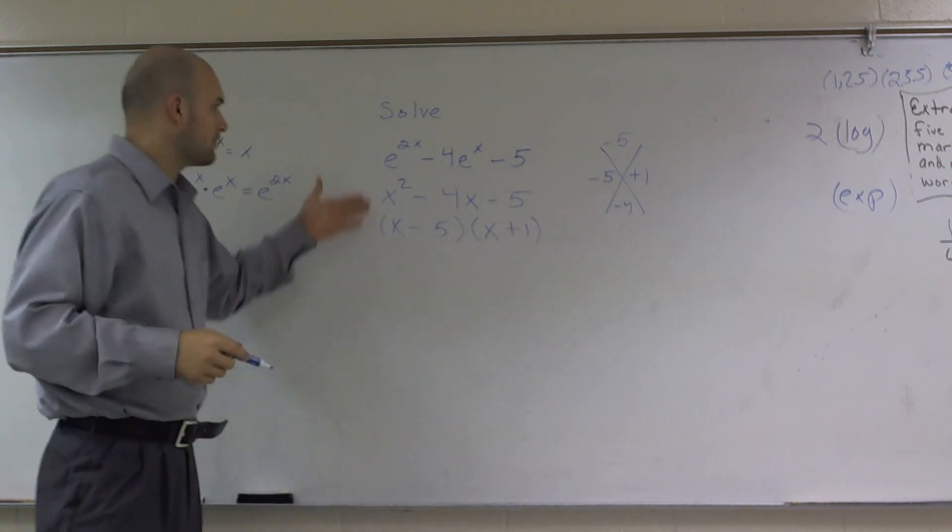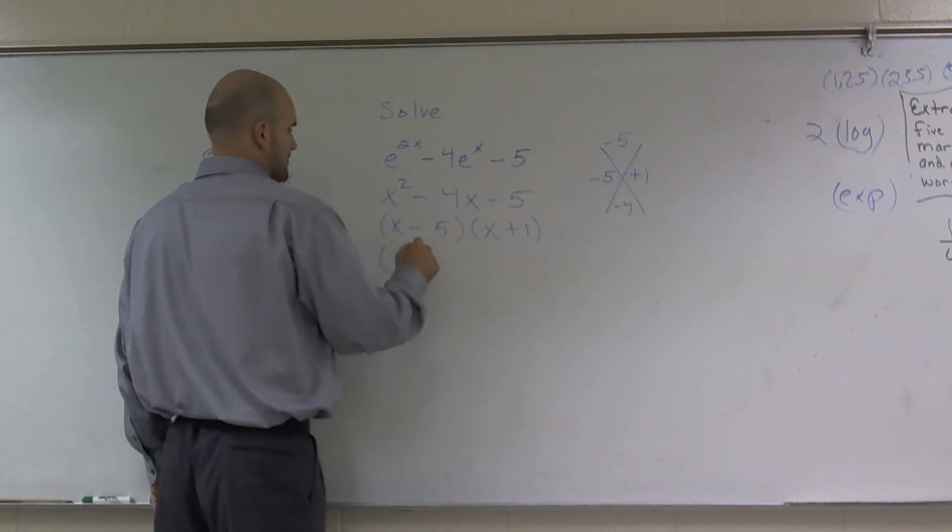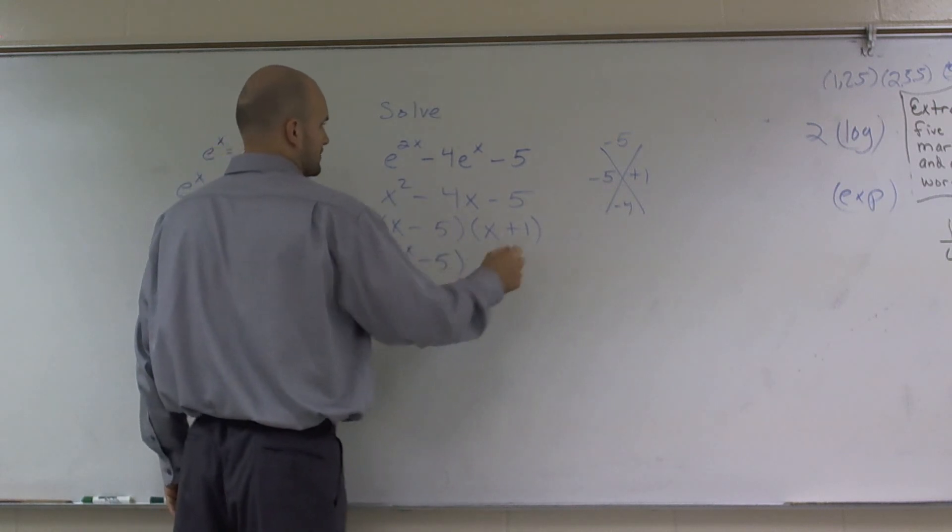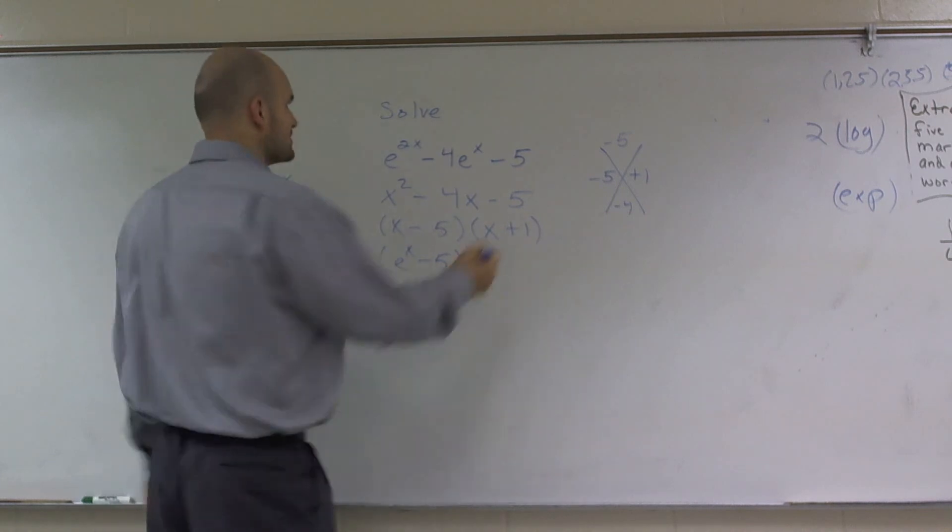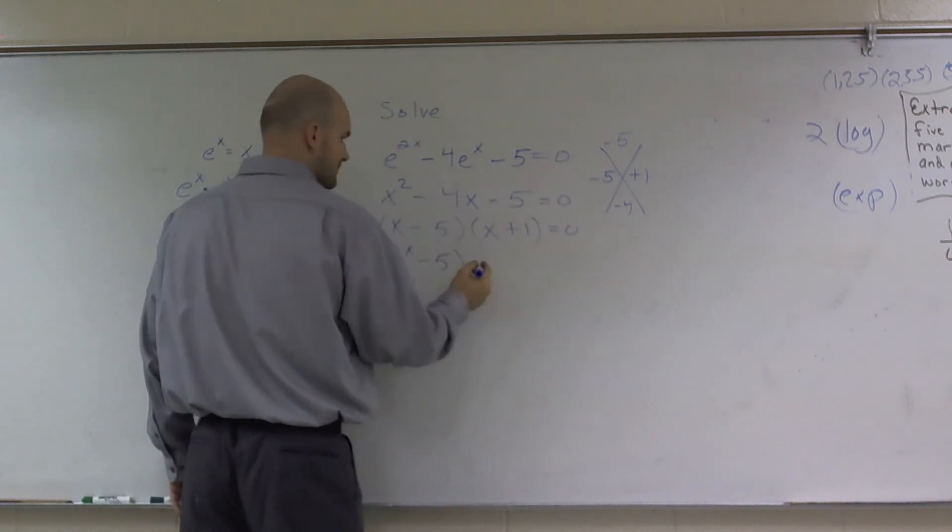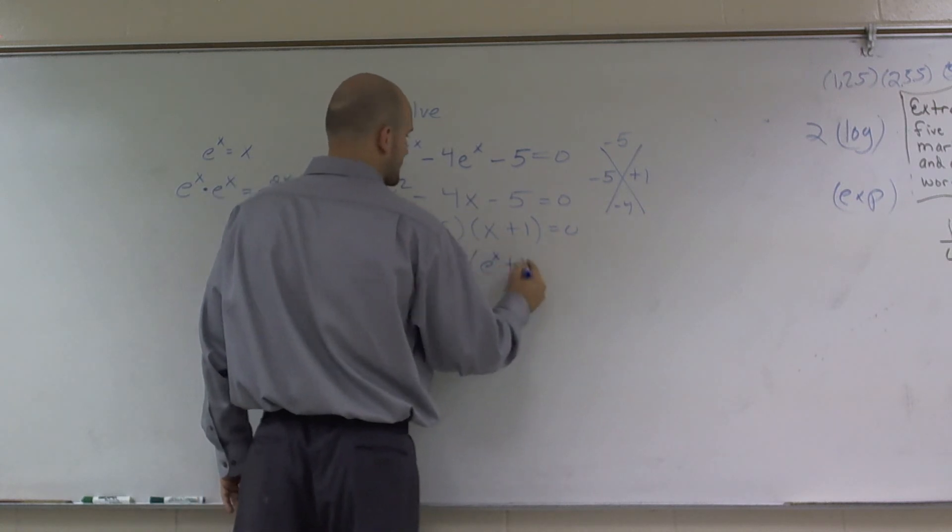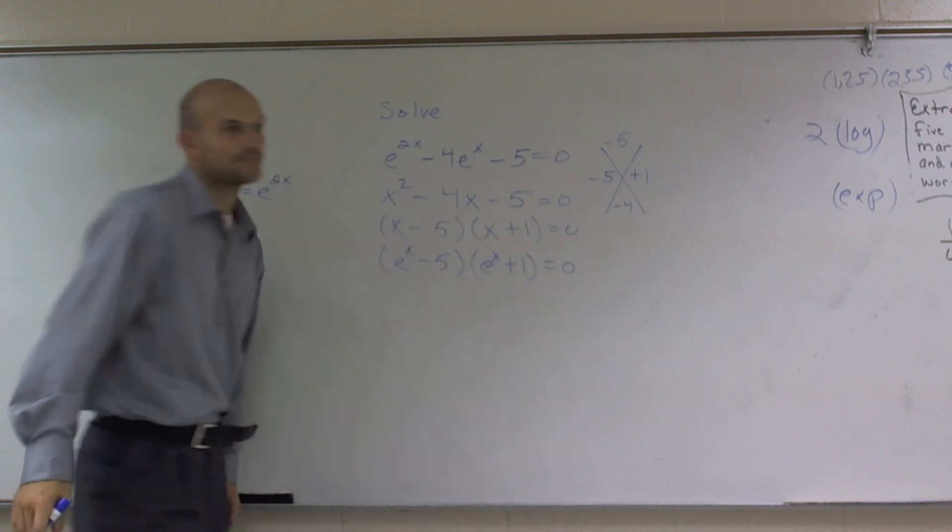Then from here, what I'll do is I'll resubstitute back in my e of x. I'm sorry, this problem equals 0. We're solving, right? So therefore, then we have e to the x minus 5 times e to the x plus 1 equals 0.